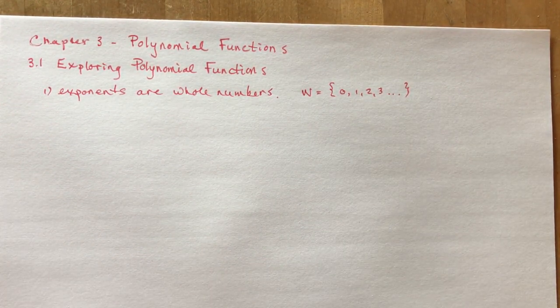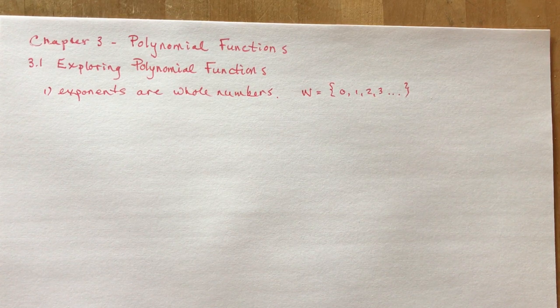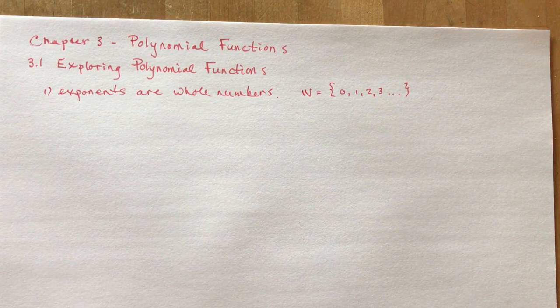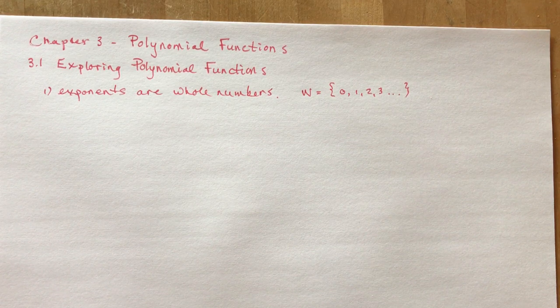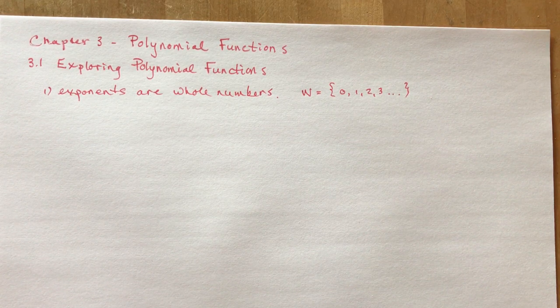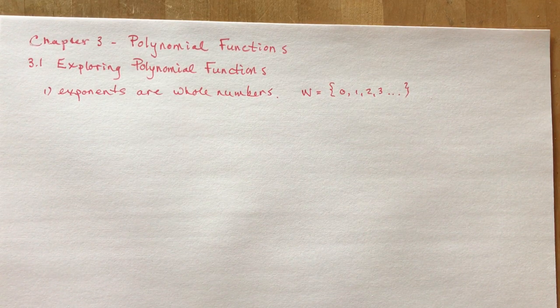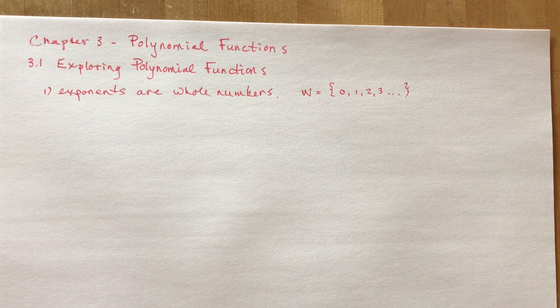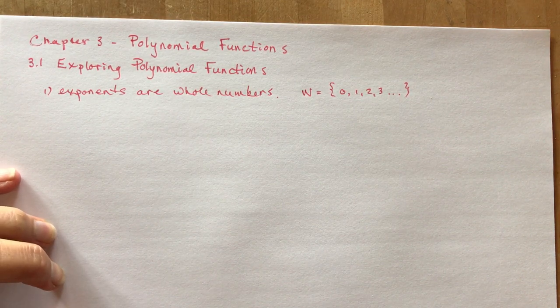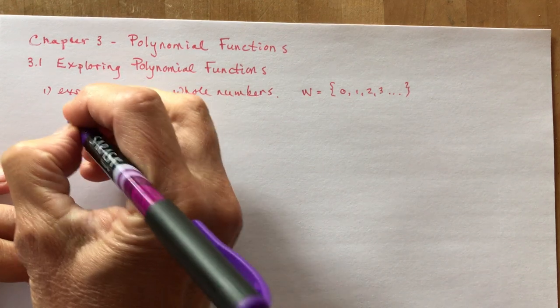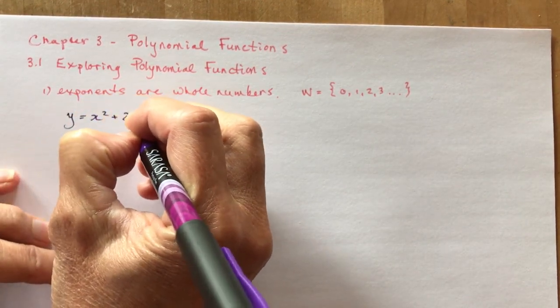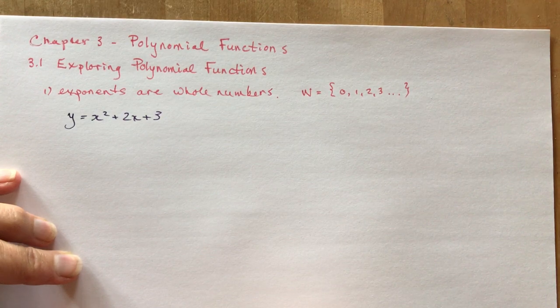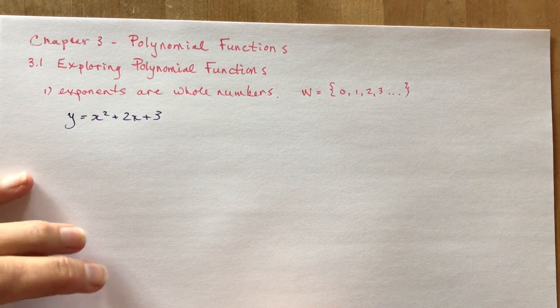That means you can't have rational exponents and that would eliminate the radical function because that's to the power of 1 half. It does include functions such as, let's write out a few polynomial functions. If I said y equals x squared plus 2x plus 3, that's a polynomial function. I love polynomial functions.